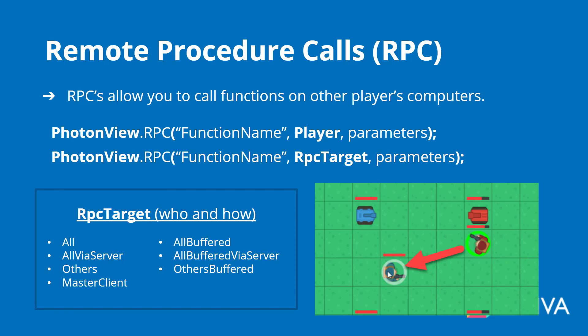Now let's go into the buffered options. 'Buffered' means it will cache that function call. For example, let's say you call a change color function and it changes your color to blue — you could call that with 'All'. But what if somebody joins the game after you call that? For you, everyone's blue, yet for them nobody's blue. The way to handle this is to use 'All Buffered', which caches that function call so that when new people join the room, it will call that function on their computer.